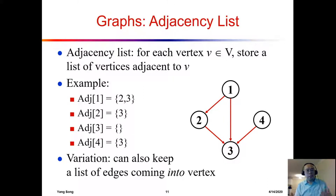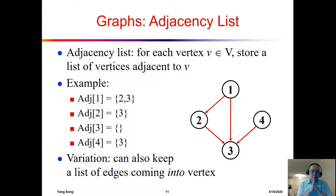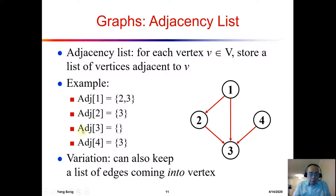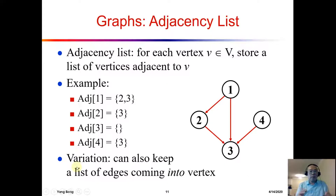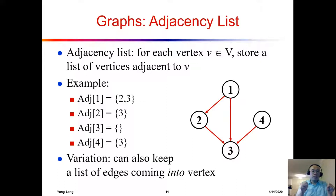This works better for a very sparse graph. A variation is that instead of keeping a list of outgoing edges, you can keep a list of incoming edges for each vertex. For example, adjacency list index 3 is empty because there are no edges going out from node three. But in the incoming-edge variation, we record which nodes have edges coming in.